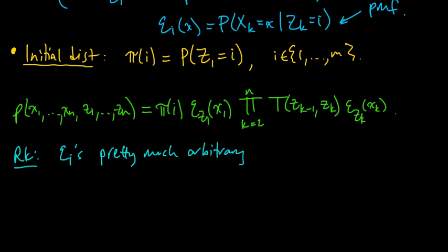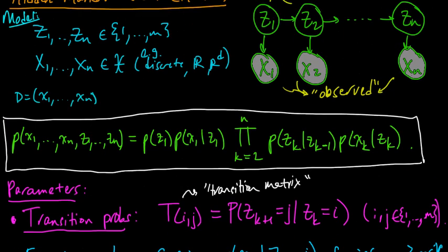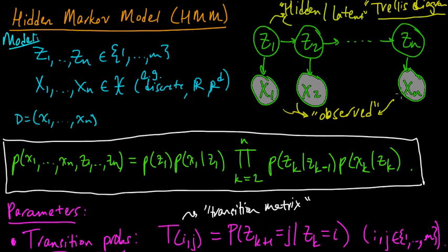For example, you could choose these to be discrete. These Xs could take discrete values. That's certainly one possibility. Another possibility, they could be real valued. If they were discrete, if they took values in a finite set, then you would just have some PMF. If they took values in some countably infinite set,